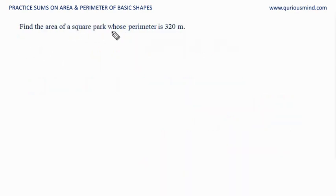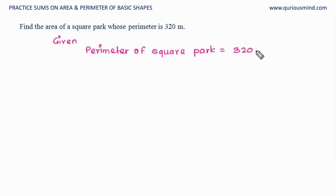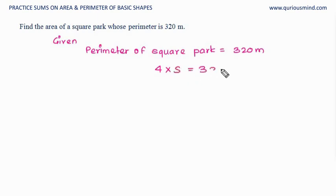Find the area of a square park whose perimeter is 320 meters. Given: perimeter of square park is 320 meters. We know the formula for perimeter of a square is 4 multiplied by the side, which equals 320 meters. Therefore, the length of side is 320 divided by 4, which is 80 meters.